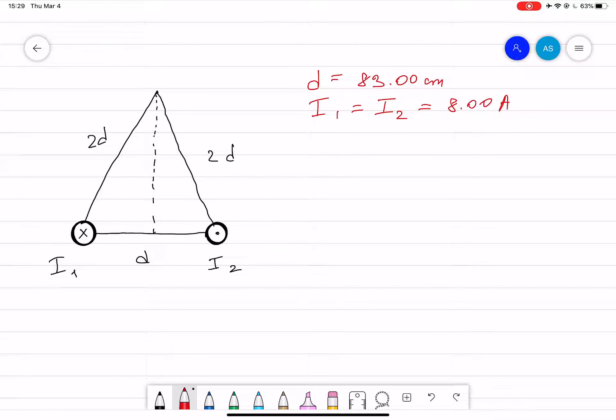We have here two very long straight parallel wires separated by distance d, carrying a current of magnitude I in opposite directions. Find the magnetic field at a point equidistant from the lines with a distance 2d from each line. So basically we have to find the total magnetic field at this point, at a distance of 2d.